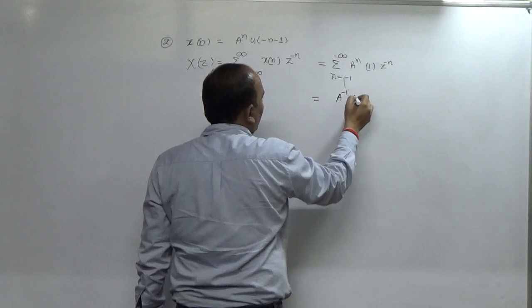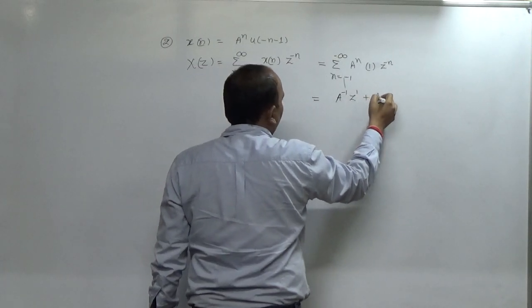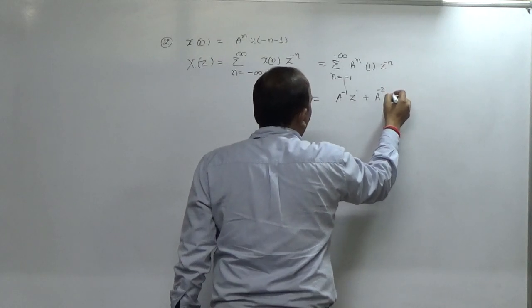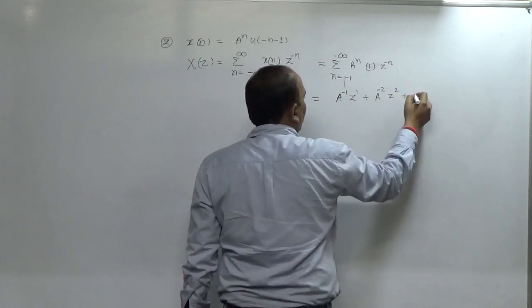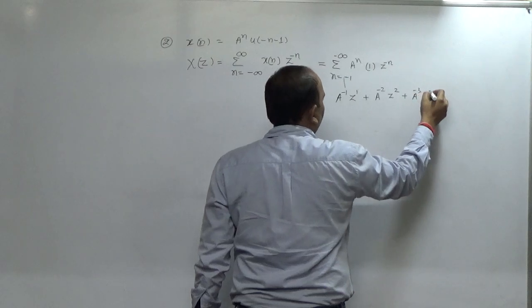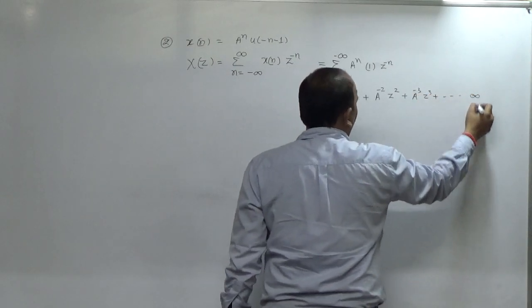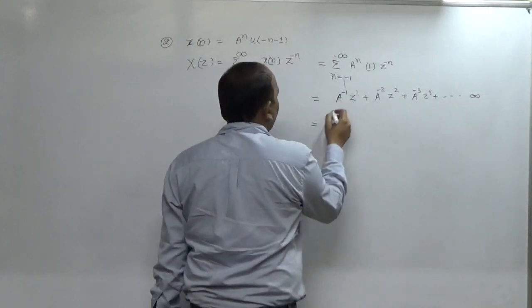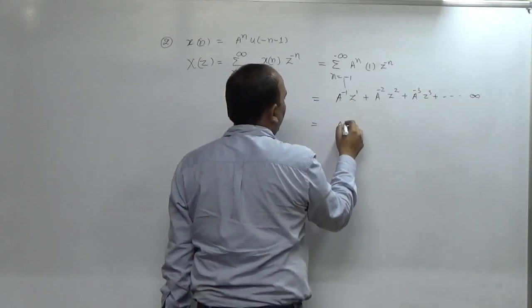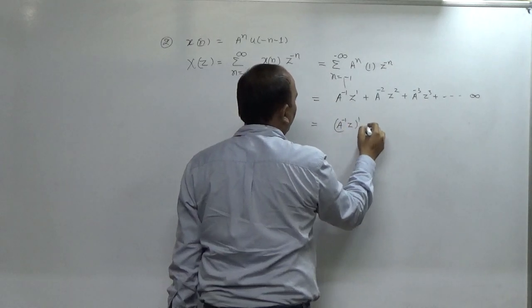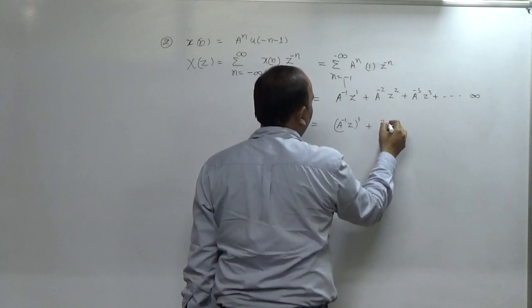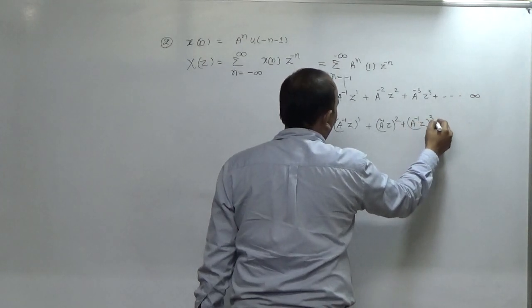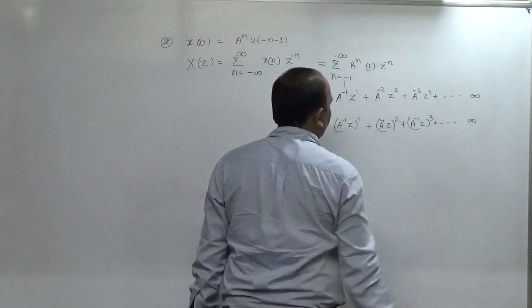Expanding the series: a^(-1)·z^1 + a^(-2)·z^2 + a^(-3)·z^3 + ... up to infinity. This can be rewritten as a^(-1)·z + a^(-2)·z^2 + a^(-3)·z^3 + ... up to infinity, which equals a^(-1)z + (a^(-1)z)^2 + (a^(-1)z)^3 + ... up to infinity.